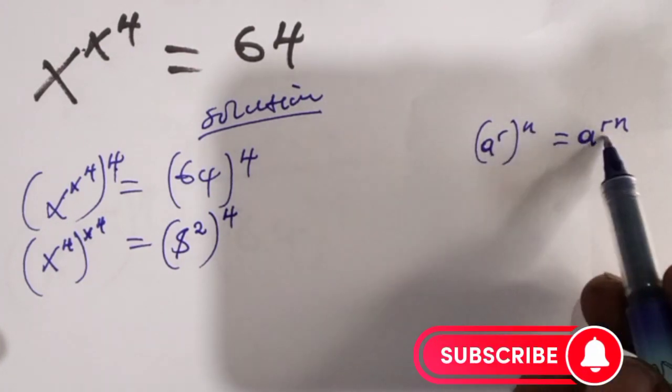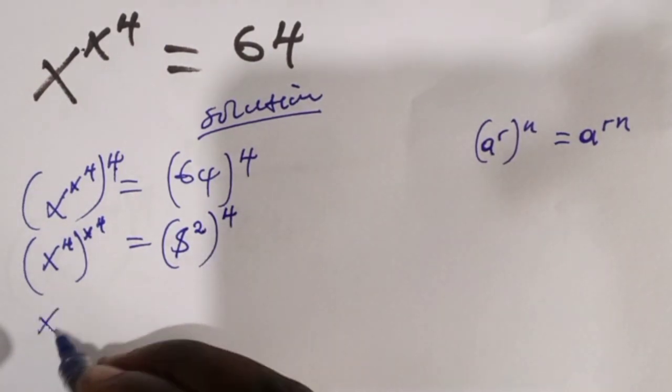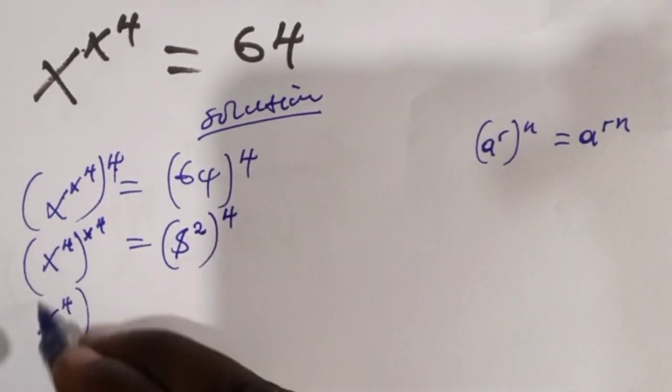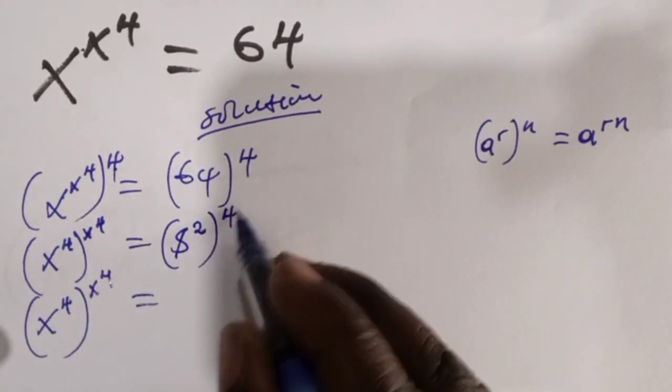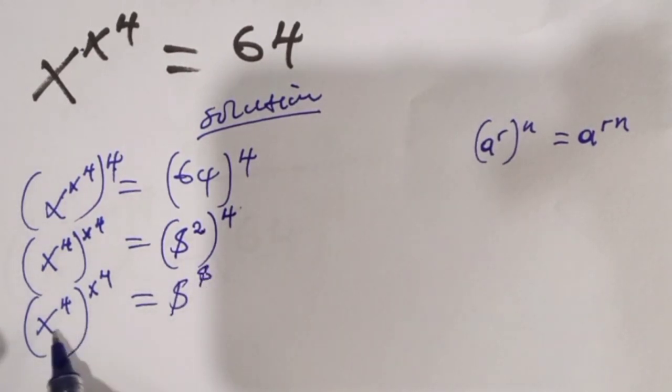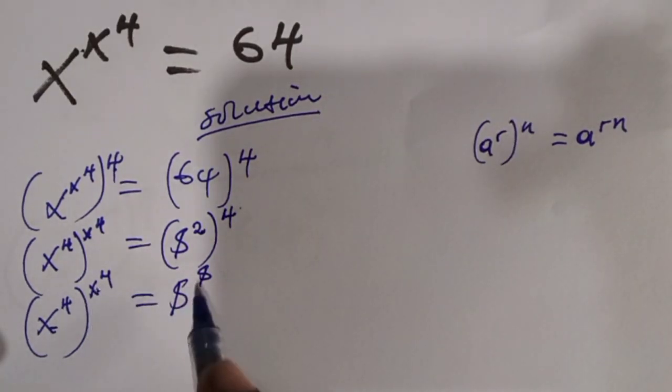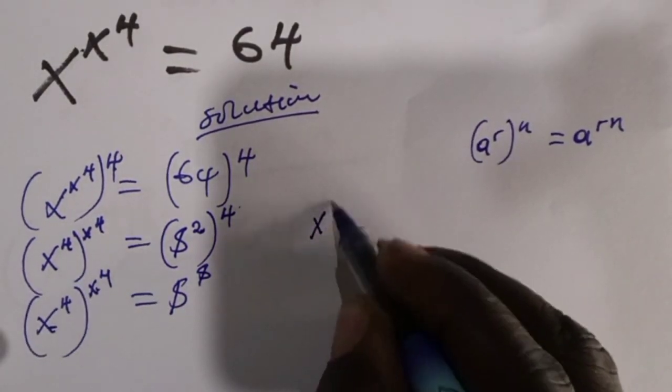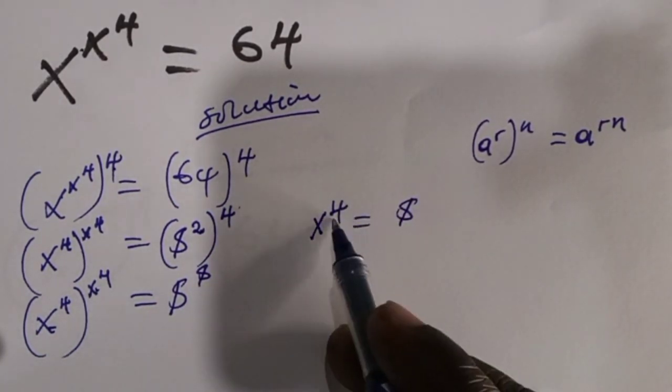So we are going to multiply 2 times 4, so we are going to have x power 4 then x power 4 which equals 2 times 4 which is 8 here and 8 here. So that means this exponential, it is equal to x power 4, will be equal to 8.